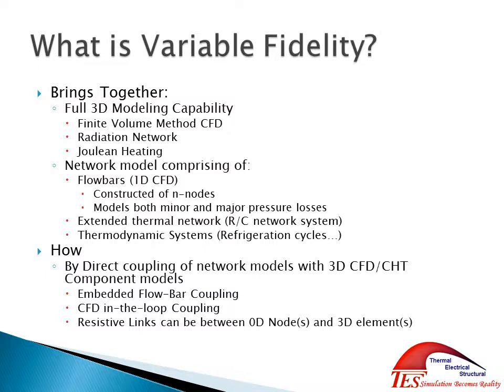You can have an embedded flow bar within a 3D model, or you can have a 3D CFD model that's embedded into the 1D system, and those will be solved simultaneously within the same solver, so you're not having to go between different softwares. You can also have resistive links, which are thermal links going between nodes found in both the 3D side and the 1D side — zero-node models — so you could have a link taking it directly from your thermodynamic component that represents your engine and directing that into a 3D model of something sitting near or on the engine.